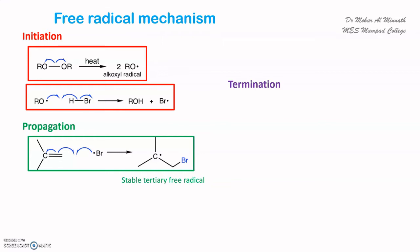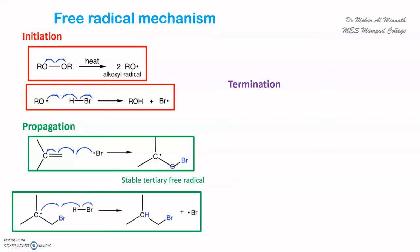Once bromine has attached onto the alkene, the carbon free radical abstracts a proton from another HBr molecule, forming a stable haloalkane product, and a new bromine free radical is regenerated. This bromine free radical can again react with another alkene molecule and the chain reaction continues.